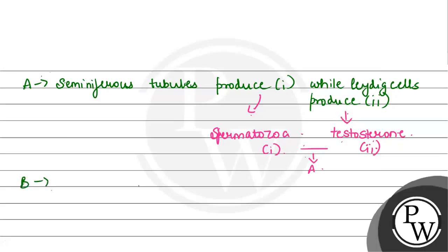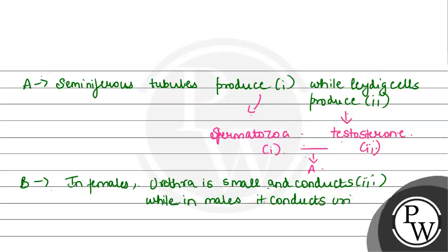Statement B given says in females, urethra is small and conducts, so there's a third blank given. It conducts, and while in males, so while in males it conducts urethra and it conducts urine and fourth. If we talk about what the urethra conducts in females, it is urine, so the third blank is urine.